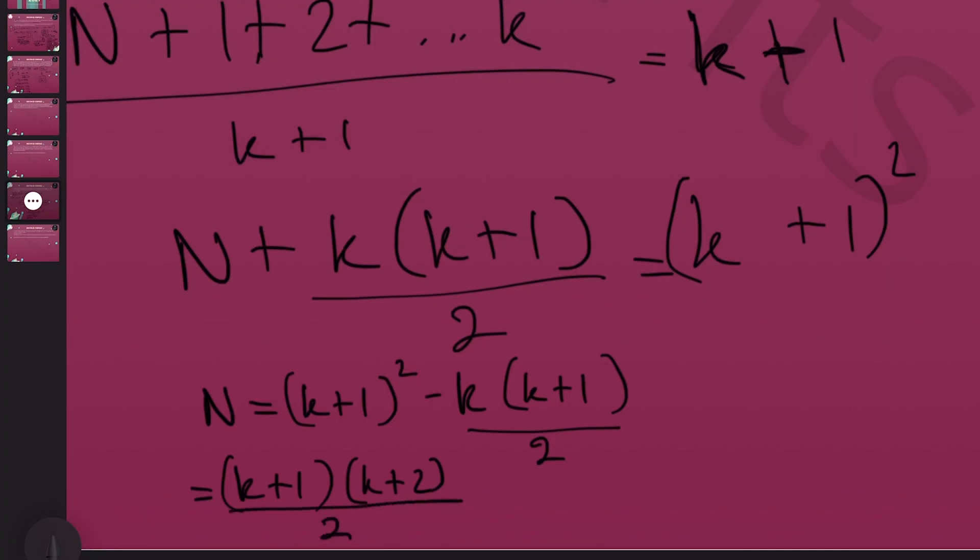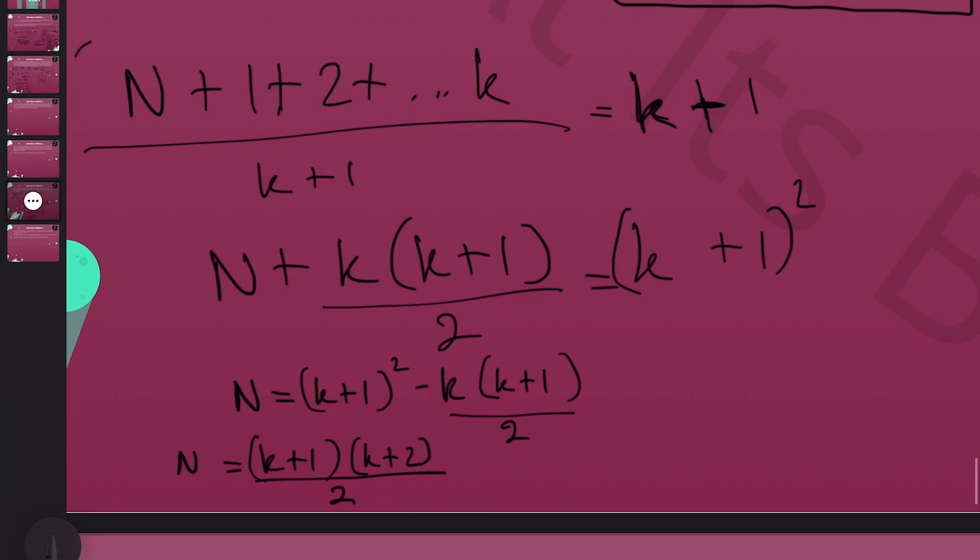That ends up with k plus one times k plus two, over two. Look at this, you can see that n is a triangular number. We started with an n-set with minimal mean and end up with n being a triangular number. What's more, this whole argument is reversible.